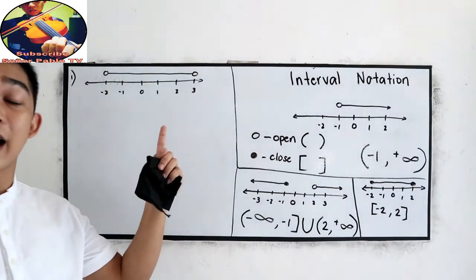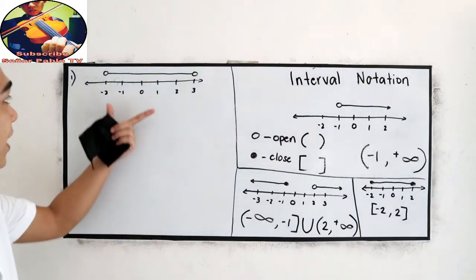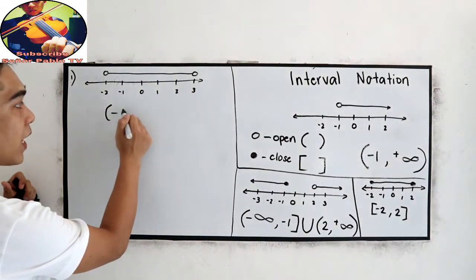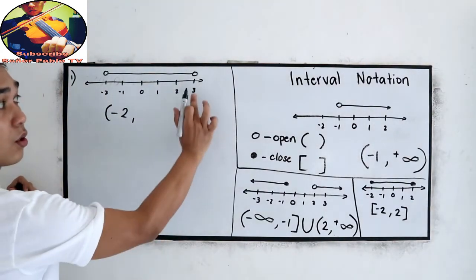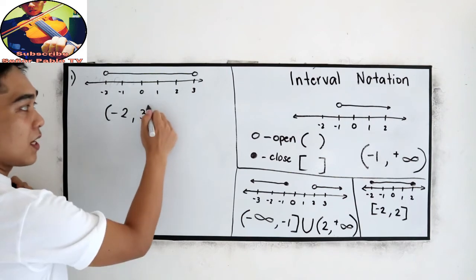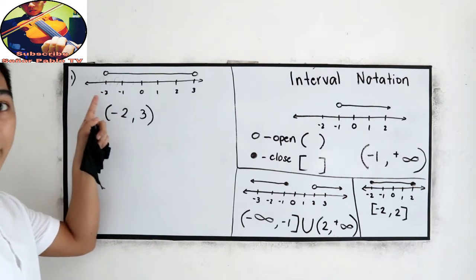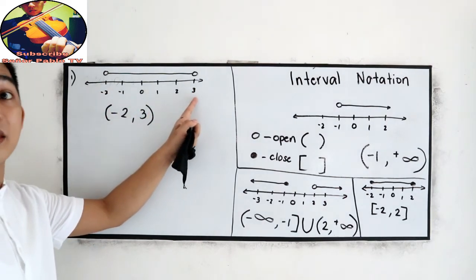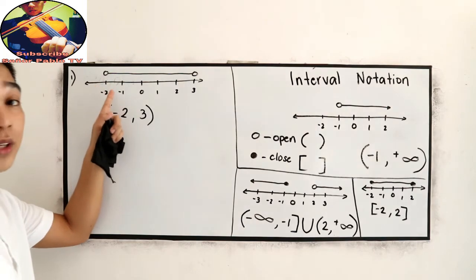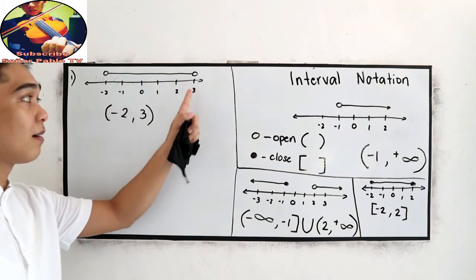After answering, you can resume watching the video. Let us try: open at negative 2, so open parenthesis negative 2, comma, open at positive 3, so positive 3 with open parenthesis. That means negative 2 is not included and 3 is not included, but values like 1.99, 1.98, negative 1.97, negative 1.99, and positive 2.99 are included.